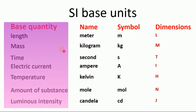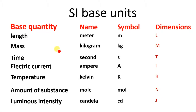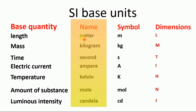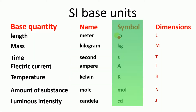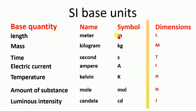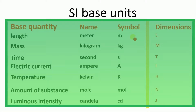There are seven basic quantities in physics, and each of these quantities has a specific unit represented by a specific symbol, and every unit has its specific dimensions. Dimensions are usually denoted by capital letters: the dimension of length is L, the dimension of mass is M, and the dimension of time is T. Similarly for current, temperature, amount of substance, and luminous intensity.